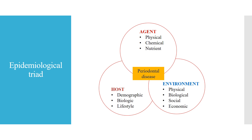Coming to the epidemiological triad, which includes agent, host, and environment. Under the agent: physical, chemical, and nutrition. Under the host: demographic, biologic, and lifestyle. Under environment: physical, biological, social, and economic. Where all three circles meet, the periodontal disease will start.